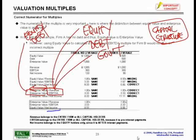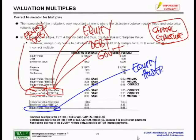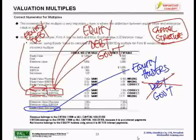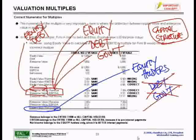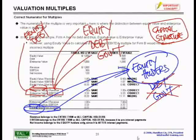Now, taking a look at equity value over net income — who has a claim on net income? Only the equity holders. Why do only the equity holders have a claim on net income? Because the debt holders have already been paid, as well as the government. The debt holders have already been paid their interest and the government has already been paid their taxes. That's the net income number — the net number. So therefore, the only constituency that has a claim on net income is equity. Therefore, equity value is the correct numerator for net income.